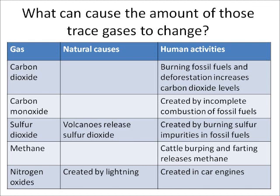First, carbon dioxide. The levels of carbon dioxide are going up. That's because we're burning more and more fossil fuels and we're chopping down more and more trees — that's called deforestation. Carbon monoxide levels may also go up due to the incomplete combustion of fossil fuels.